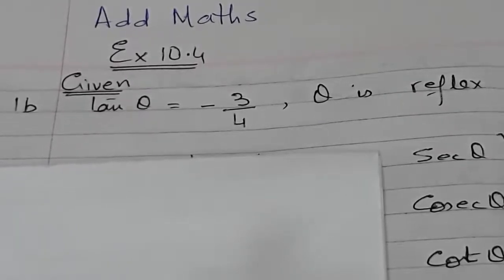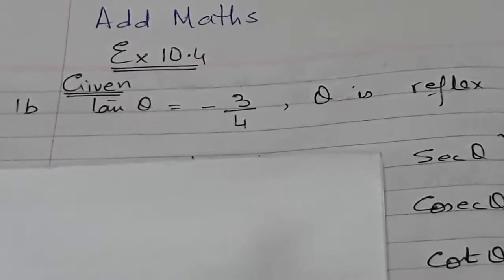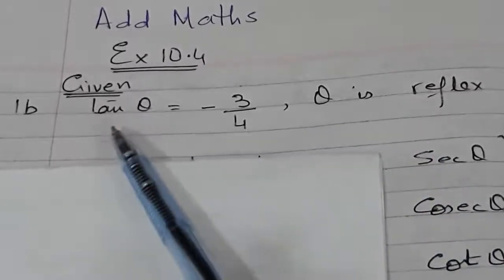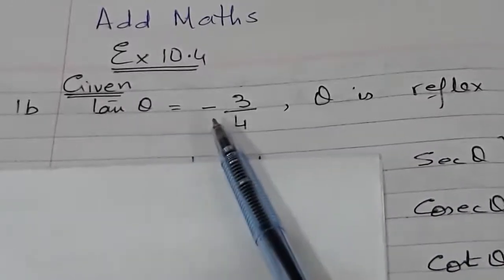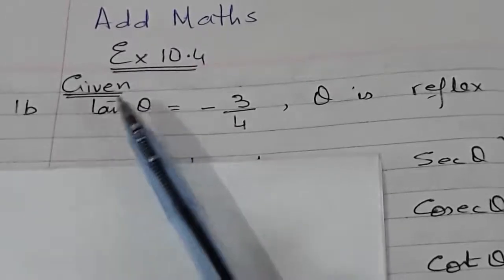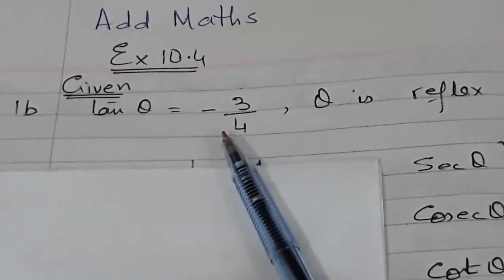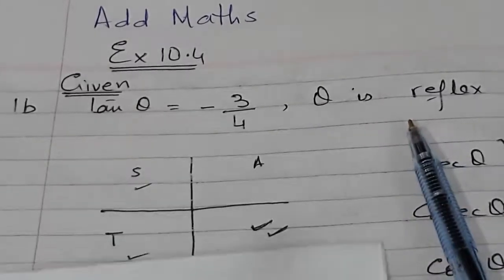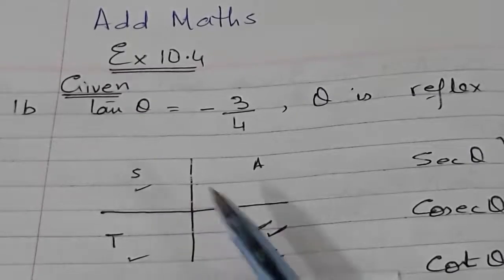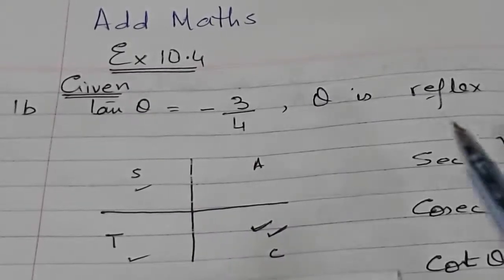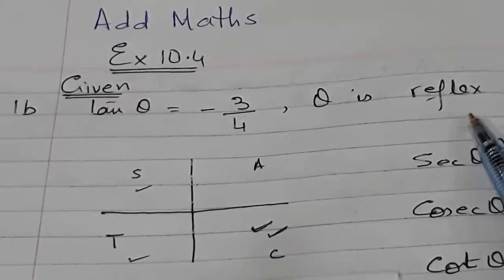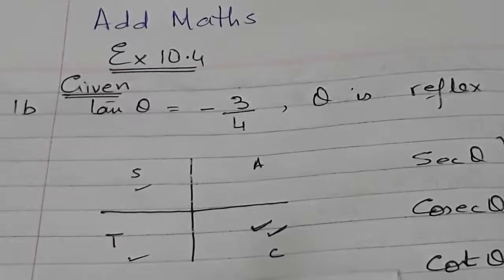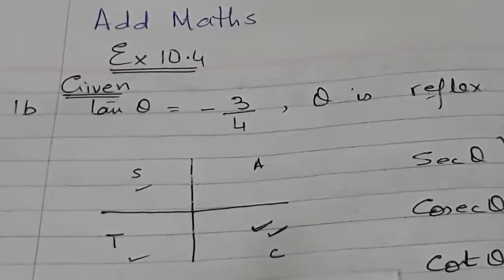In this exercise the first few questions use the same technique. Two hints are given: number one is that tan θ is negative, so the value of θ for tan will give a negative value. Theta is reflex, meaning it is in the third or fourth quadrant because reflex angles are greater than 180 and less than 360.